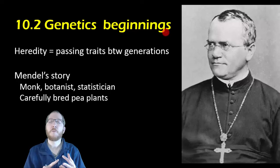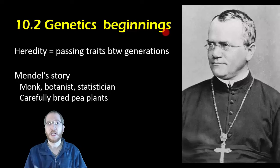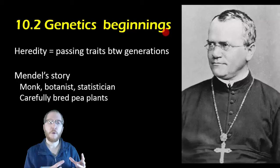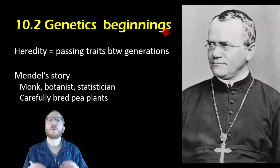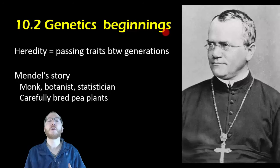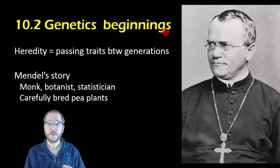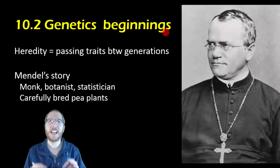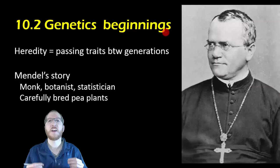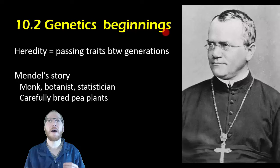Pea plants are also useful because many of their traits only have two possibilities — like tall or short, or purple flowers or white flowers. Mendel was able to look at seven traits that each had only two possibilities, which gave him a great way of collecting data. If he had tried to study humans, where many traits are very complicated genetically, he probably wouldn't have been able to discover anything useful.